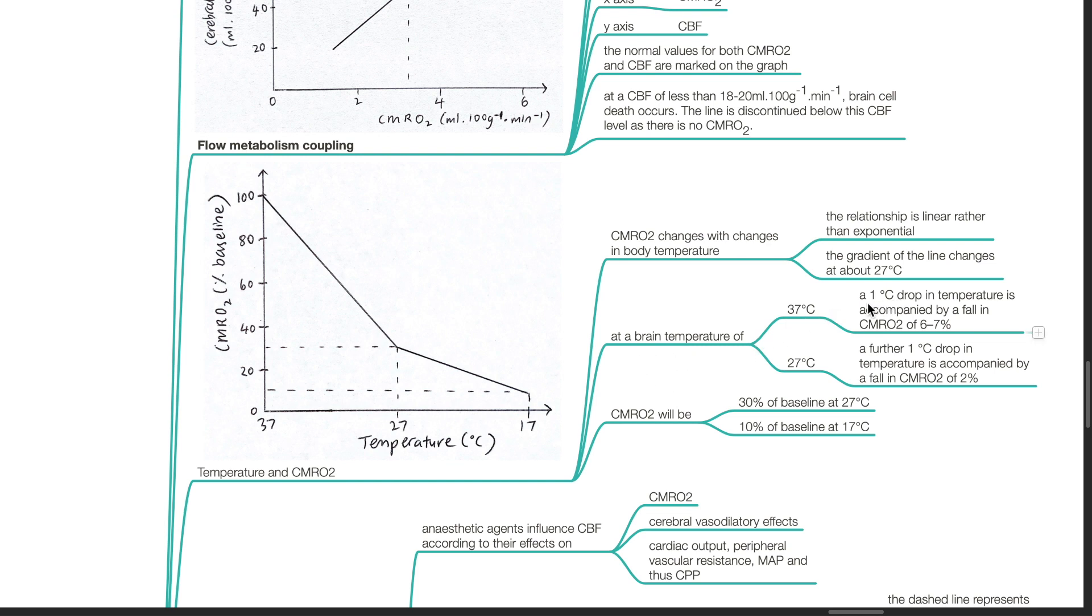At a brain temperature of 37 degrees Celsius, a 1 degree Celsius drop in temperature is accompanied by a fall in CMRO2 of 6 to 7%. At 27 degrees Celsius, a further 1 degree Celsius drop in temperature is accompanied by a fall in CMRO2 of 2%. CMRO2 will be 30% of baseline at 27 degrees Celsius and 10% of baseline at 17 degrees Celsius.